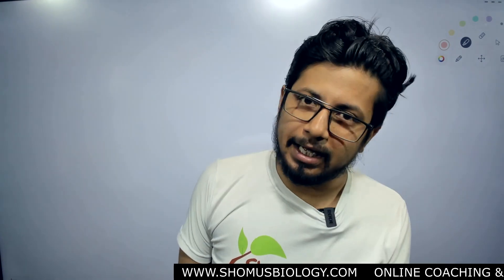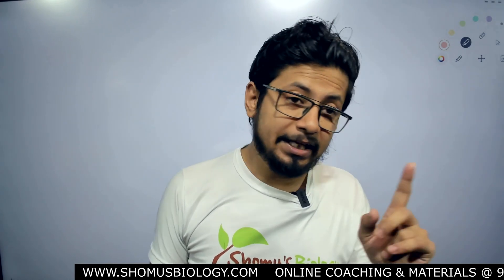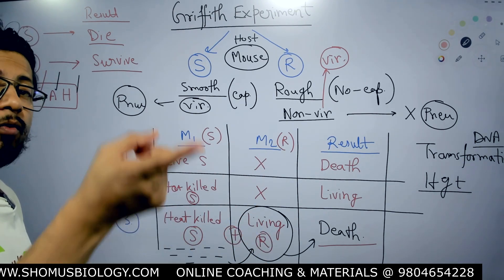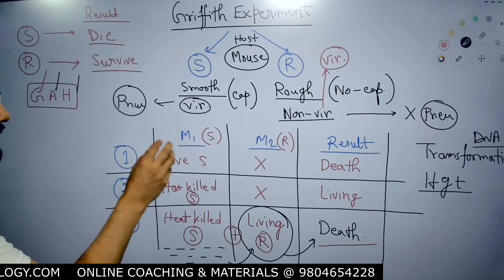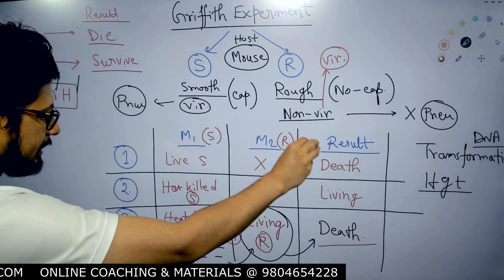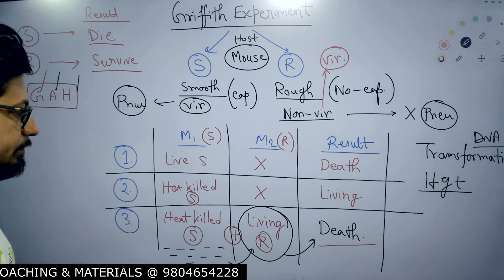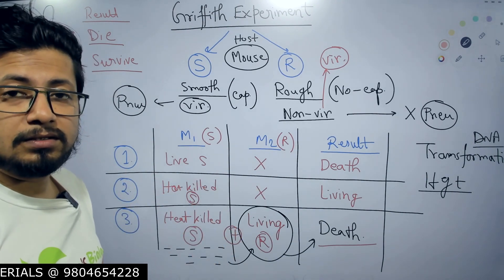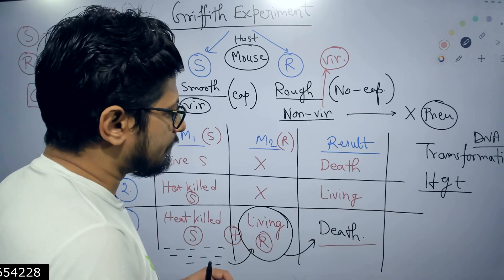In Griffith's experiment, Griffith tried to find out which kind of bacteria strain — whether R strain or S strain — was capable of causing pneumonia in mice. He found a very interesting result. Live S strain bacteria injected into mice: mice died. R bacteria transferred directly to mice: mice survived. Heat killed S strain transferred to mice: mice survived. But when heat killed S plus living R were both transferred together to the mice, the mice died.